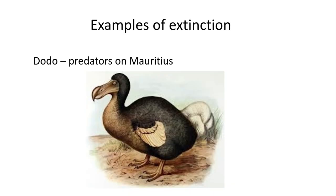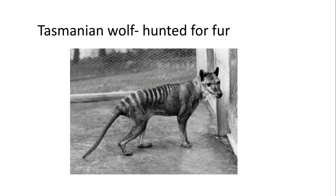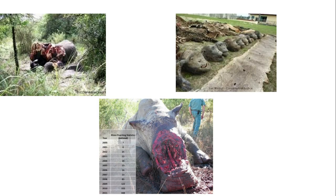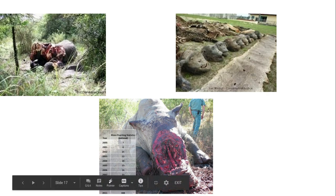This same problem exists today in New Zealand, where the introduction of predators such as foxes and cats is causing problems for native ground-nesting species like the kea and the kiwi. We also have the Tasmanian wolf, which is now extinct — it was hunted for its fur by people in Australia.